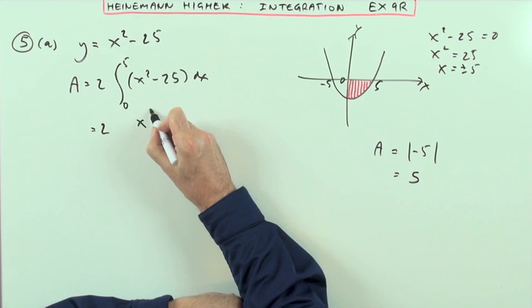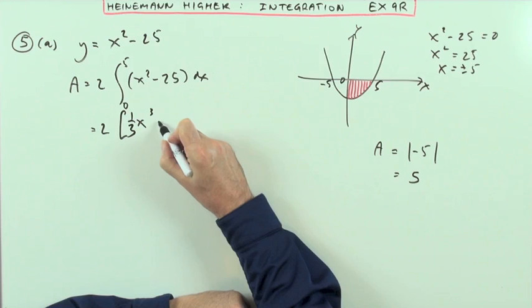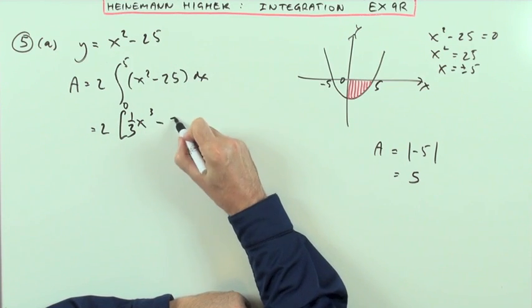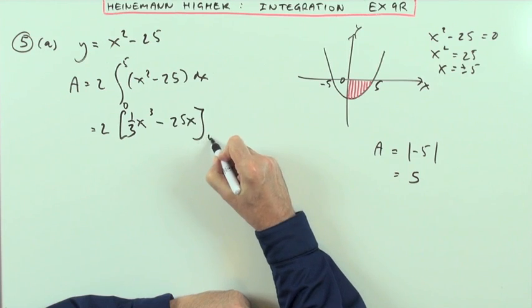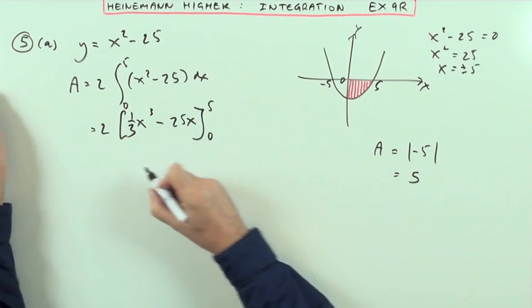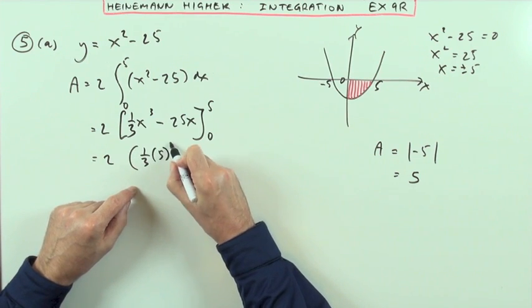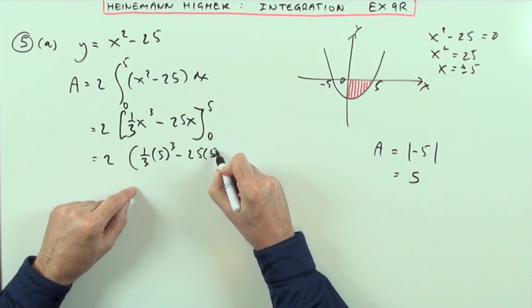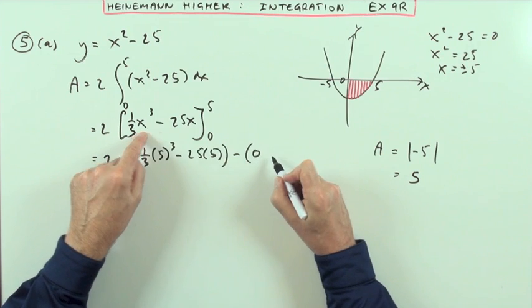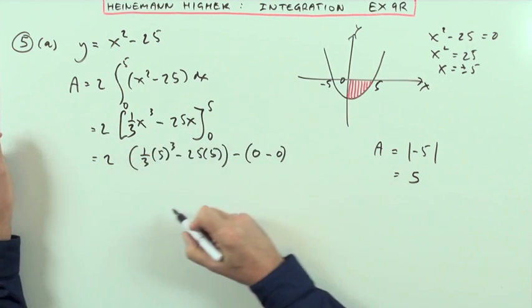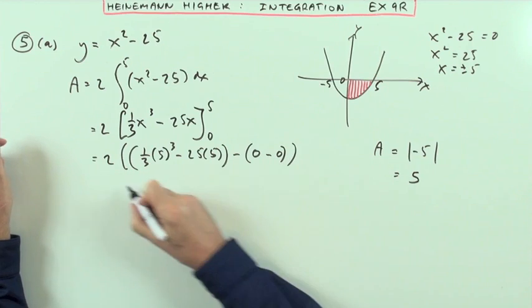Right, integrating. Up to 3, divide by 3. Straight away, I've got a wee messy part there. Constant goes back up to linear term, 25x. Work it out at 5, and take away the answer at 0. So I've got 1/3 of 5 cubed, minus 25 times 5, take away that. It's just the one product, so it'll be 0 minus 0.